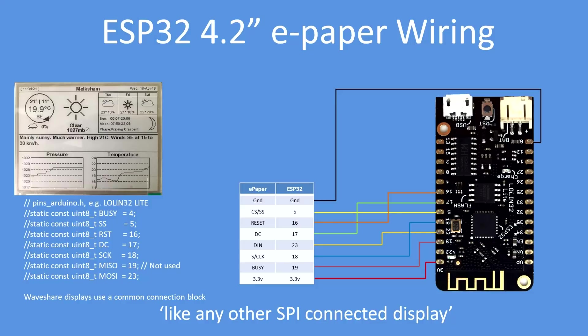ePaper displays use a common connection block connector — it's the SPI bus, pretty much the same as you'd connect any other SPI device, sensor or display. The connections are exactly the same as those in TechNote 91 with the 2.9 inch display, so you could unplug the 2.9 inch and plug in the 4.2 inch. Obviously there's a limit to what you can display on the smaller one; larger ones like 7.5 inch displays give you even more space.